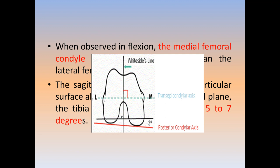We will discuss anatomy and biomechanics of the knee in detail. In the axial plane, there are two prominences — anterior and posterior.